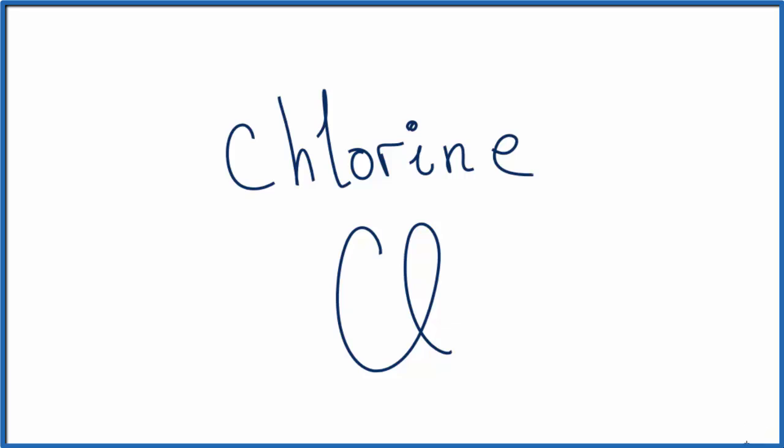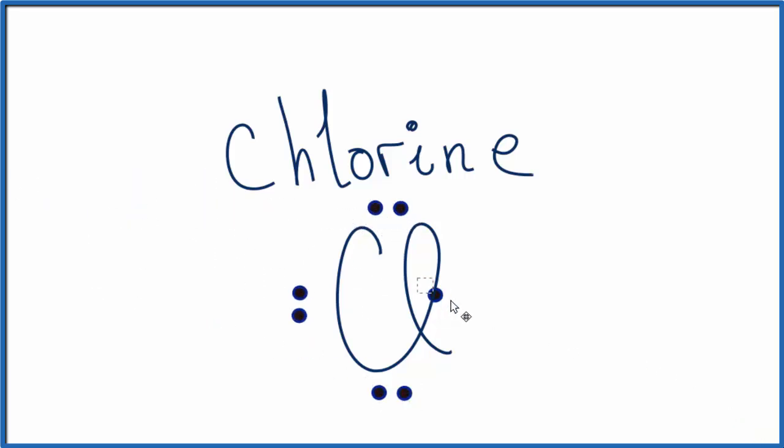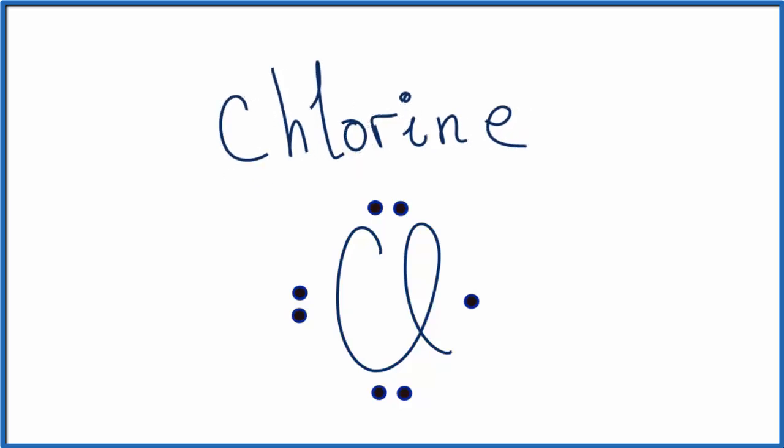So let's put 7 valence electrons around our chlorine atom. So this is the Lewis structure for chlorine as it's seen on the periodic table.